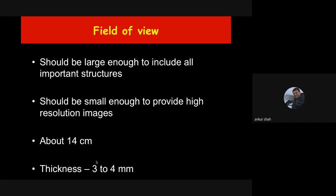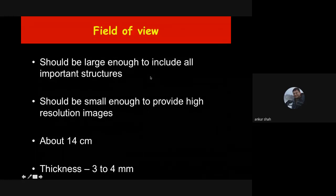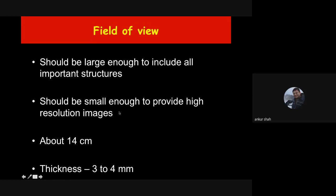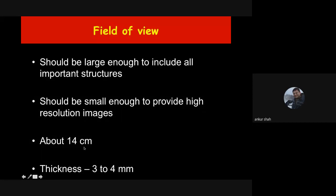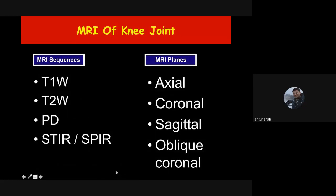The field of view should be large enough to include all important structures, including the tibial tuberosity, but small enough to give high resolution images. As field of view increases, resolution decreases. For the knee joint the ideal field of view is around 14 centimeters and images are taken at around 3 to 4 millimeters thick. We also take some 3D sequences with zero millimeter gap and continuous images, just like CT scan.